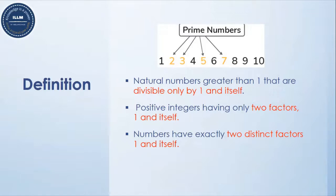Three is also having two factors: one and itself. Five is also having two factors: one and itself. Seven is also having two factors: one and itself. So these are called prime numbers.